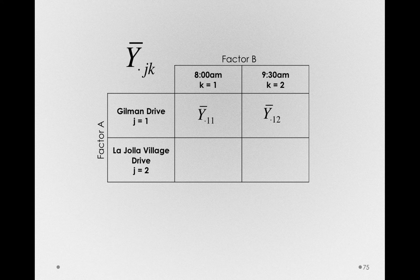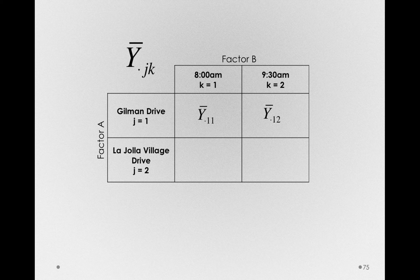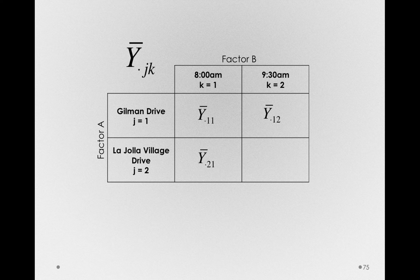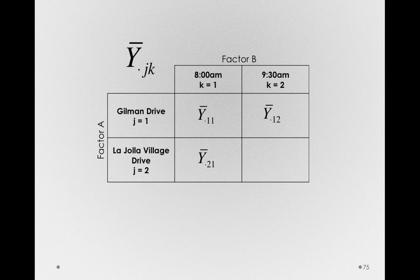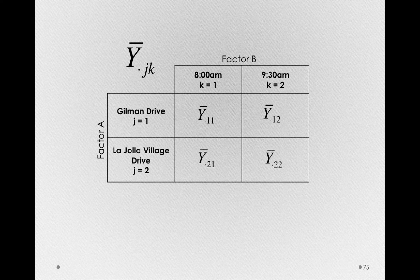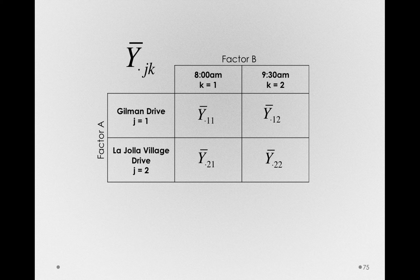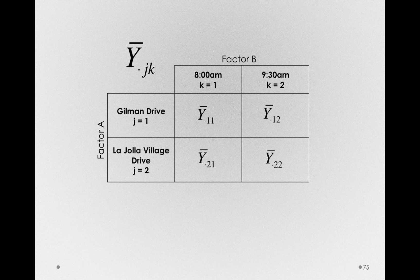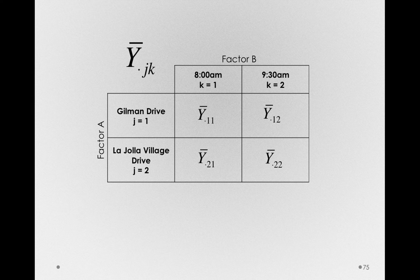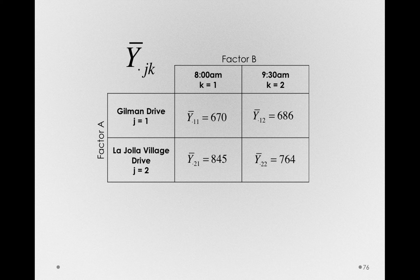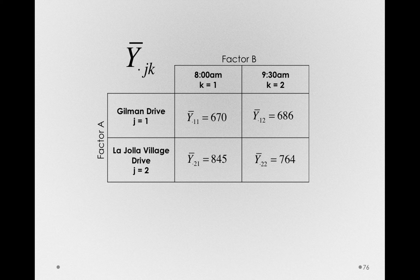In a similar fashion, La Jolla Village Drive at 8 a.m. increments the j term, so y bar dot two one. And finally, La Jolla Village Drive at 9:30 a.m. is simply y bar dot two two. Notice that using this notation, we're simply picking out which sample mean we're discussing. And these are the sample means we found before. There's nothing special about finding these.